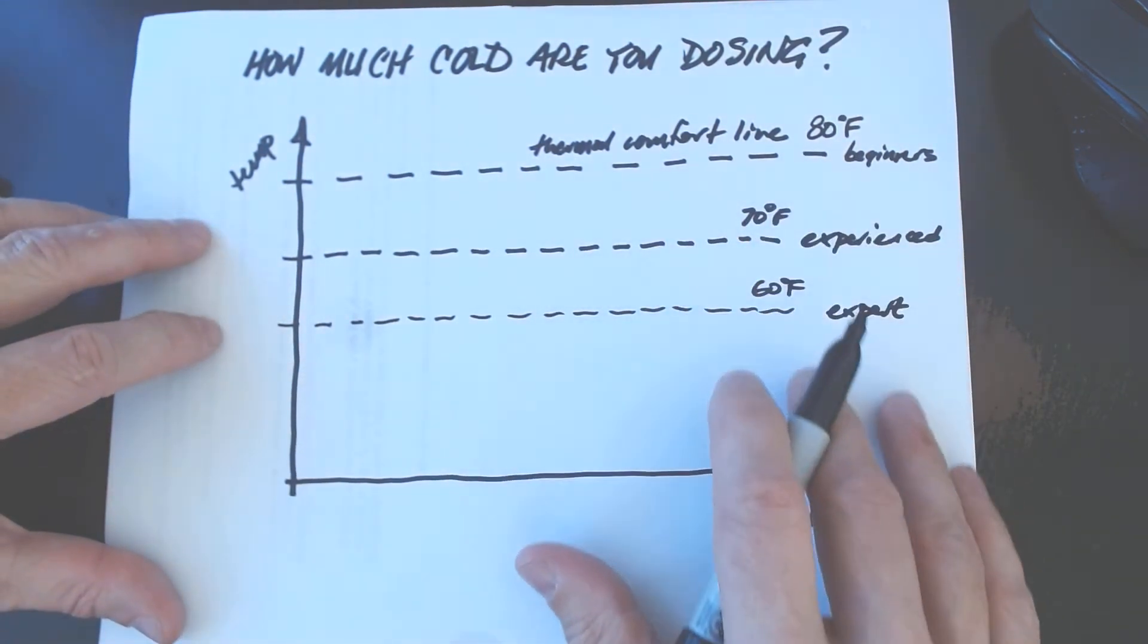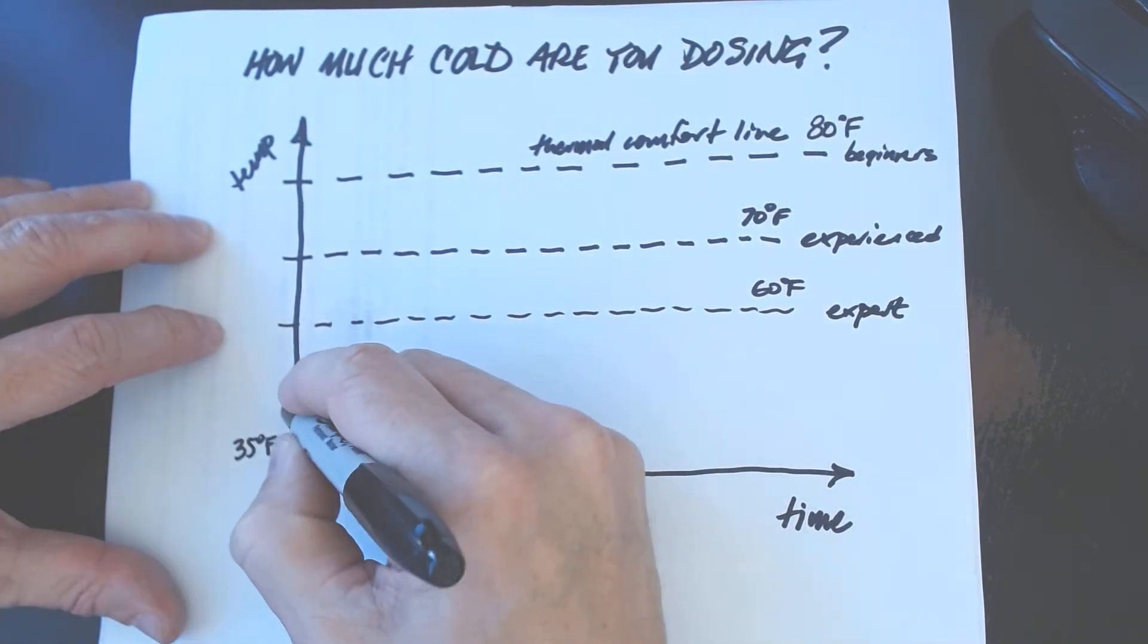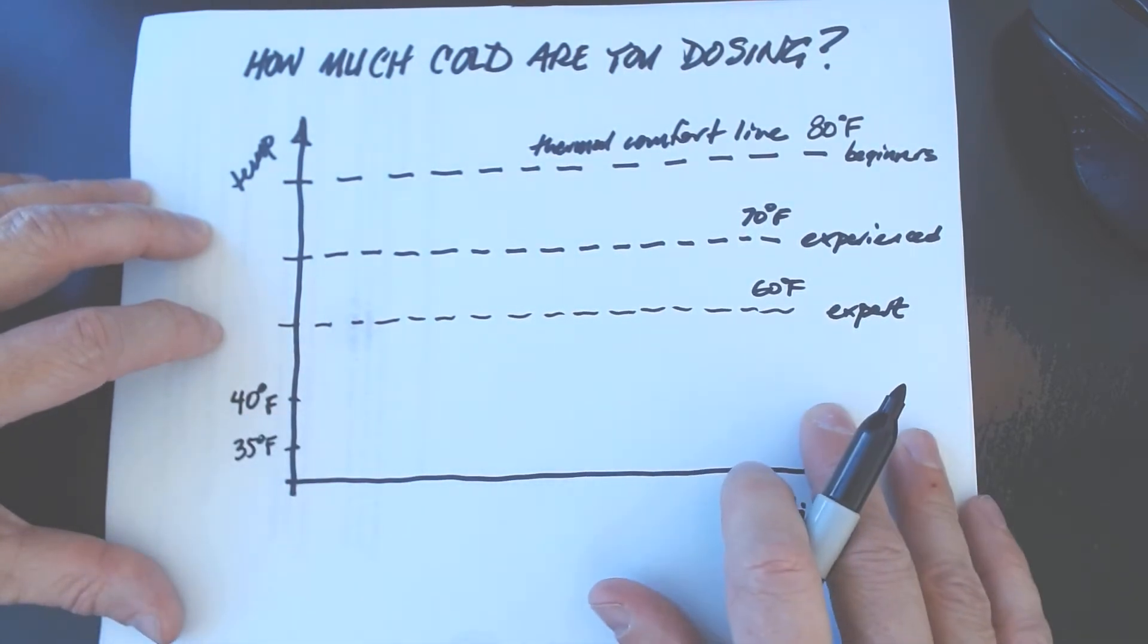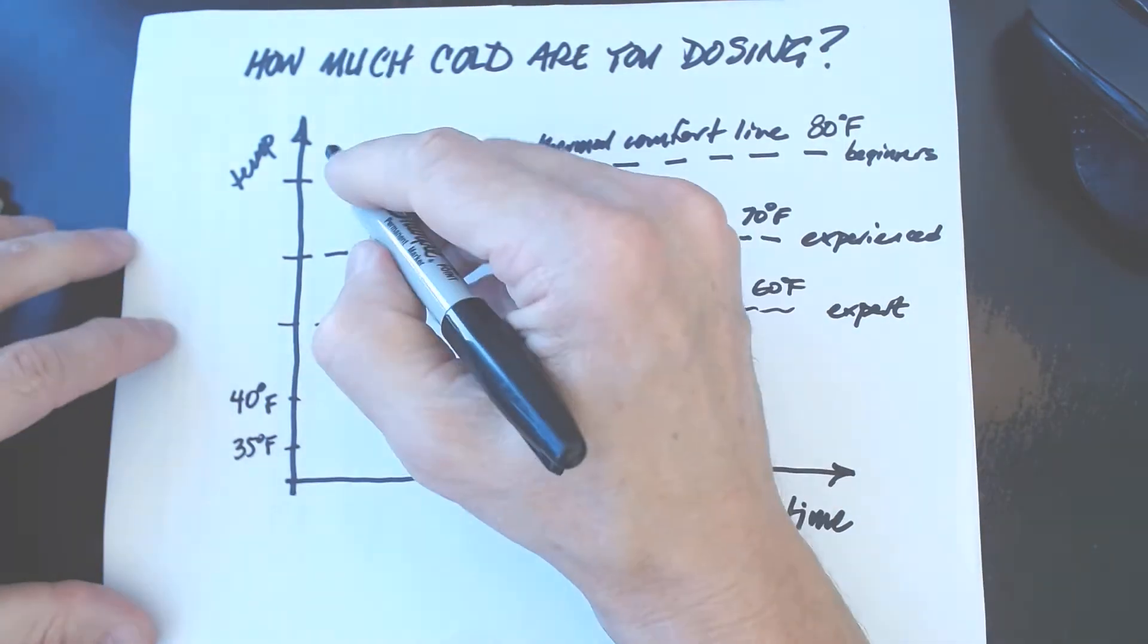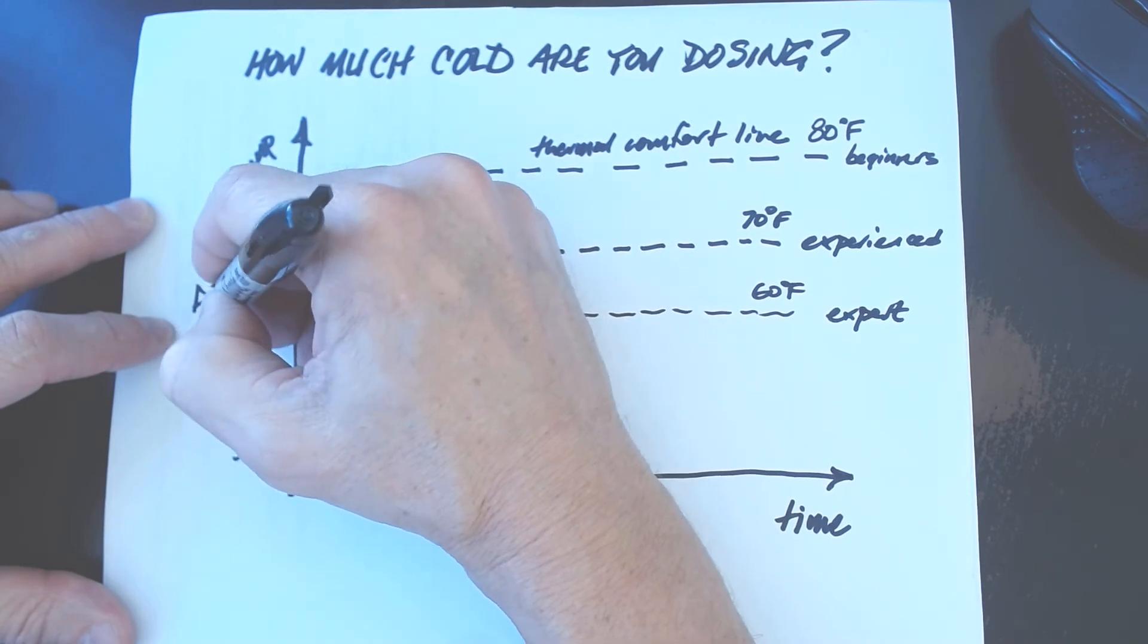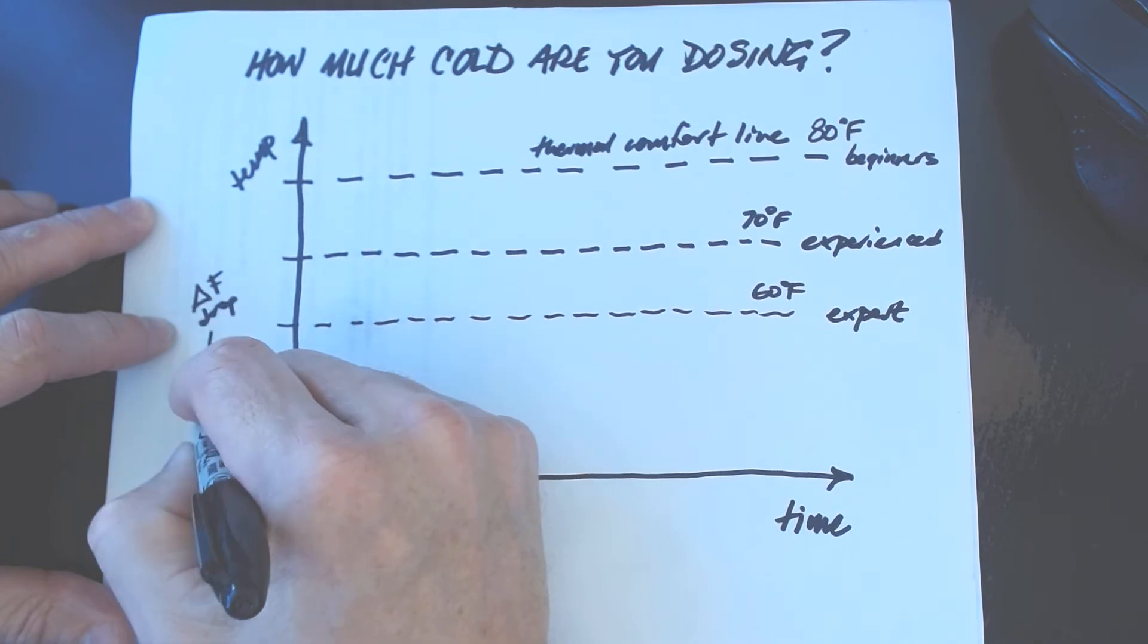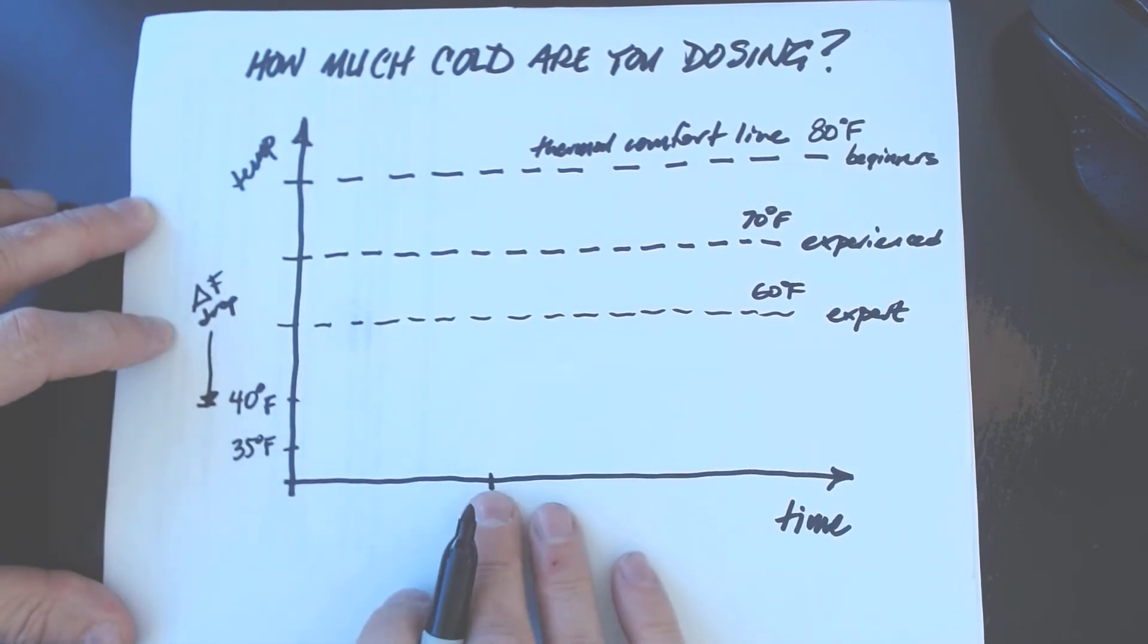So I'm gonna take an arbitrary water temperature to start us off because I like it down at 35 degrees but maybe other people would start at 40. So we'll use 40 as an example. It makes the math a little bit easier. The difference between your thermal comfort line and the temperature of your forge I'm gonna call the delta. That's the drop from your skin temperature, your comfort line, down to the temperature of the water. Once you know the drop then you can multiply the drop by the time of immersion.